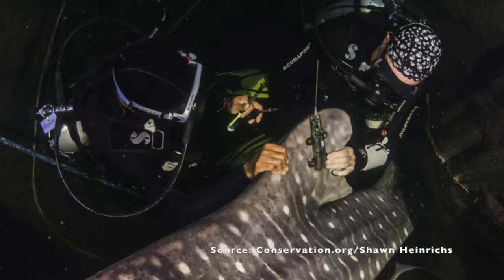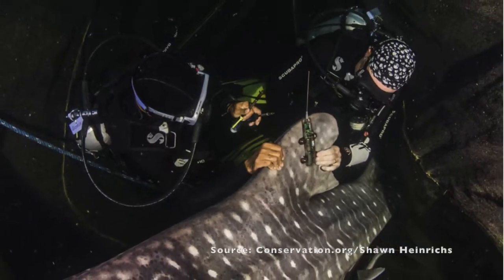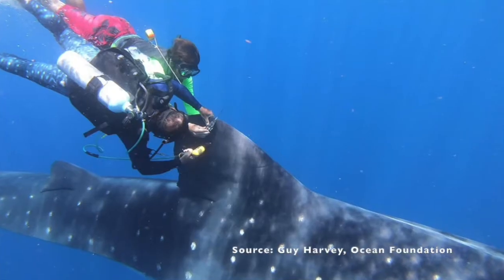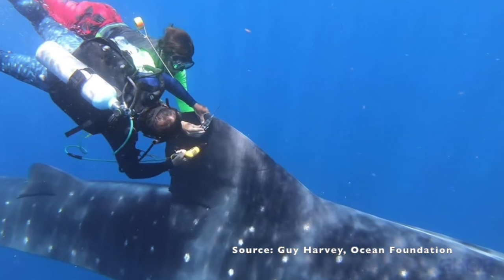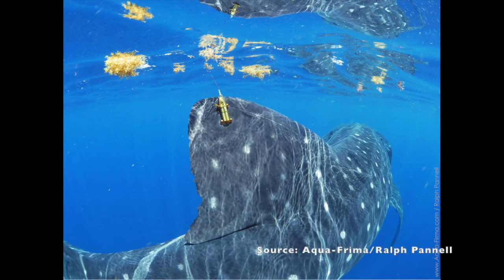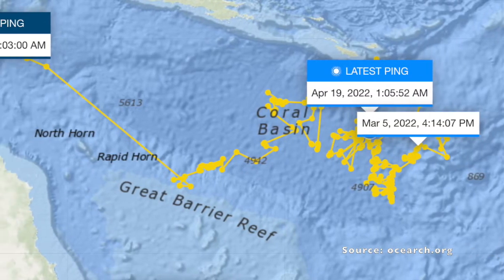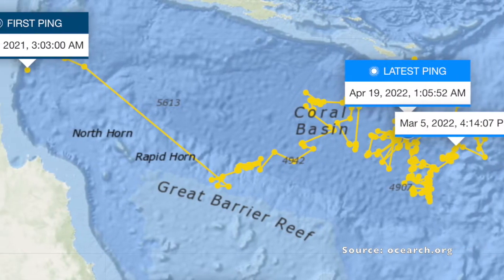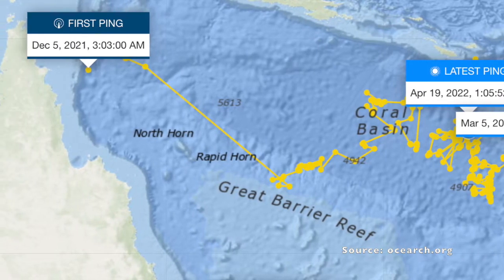To fill this gap of knowledge, this study used long-term GPS tracking devices that, when attached, can record positional location data of the shark for nearly a year, giving them a much more detailed picture of whale shark migration patterns and habitat usage than ever before.